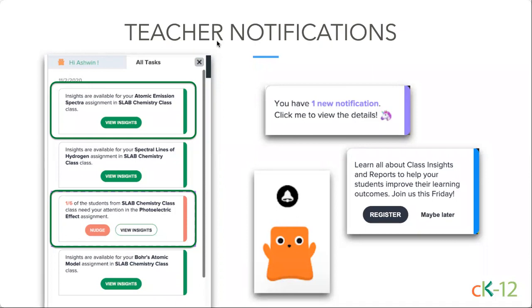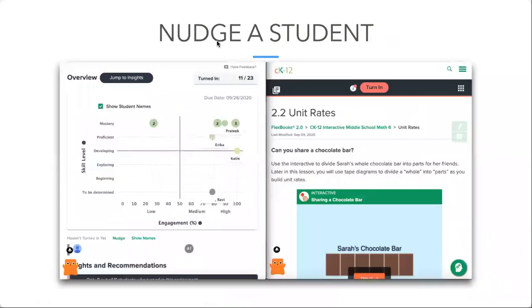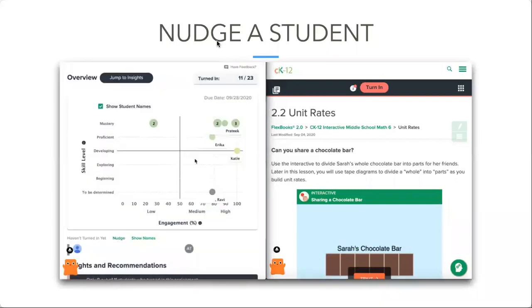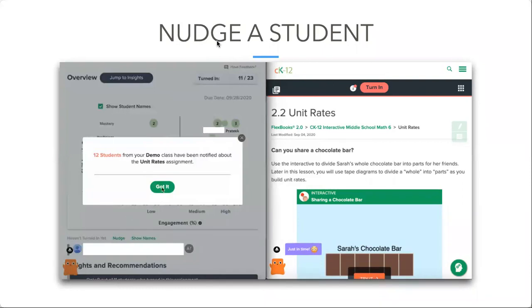If we're doing something or sharing more information, we're going to try to put those notifications in there as well so you're aware of what our team is doing in addition to what your students are doing. If you want to nudge a student you can do that from Flexi or within your class report in the 2.0 insight piece. Once you nudge that student, they'll get that just-in-time notification as they go through on that particular lesson. Use that if a student hasn't turned in work and you want to encourage them to get their work submitted on time.